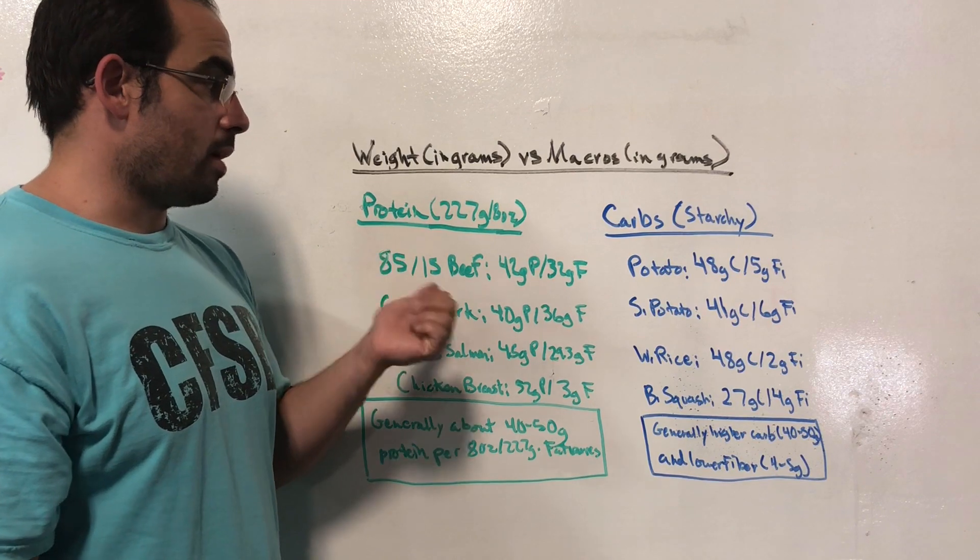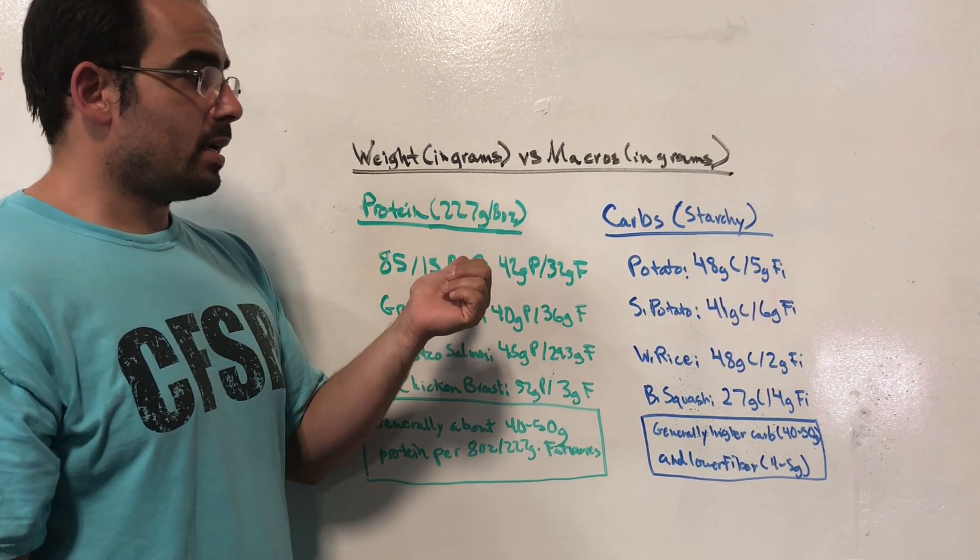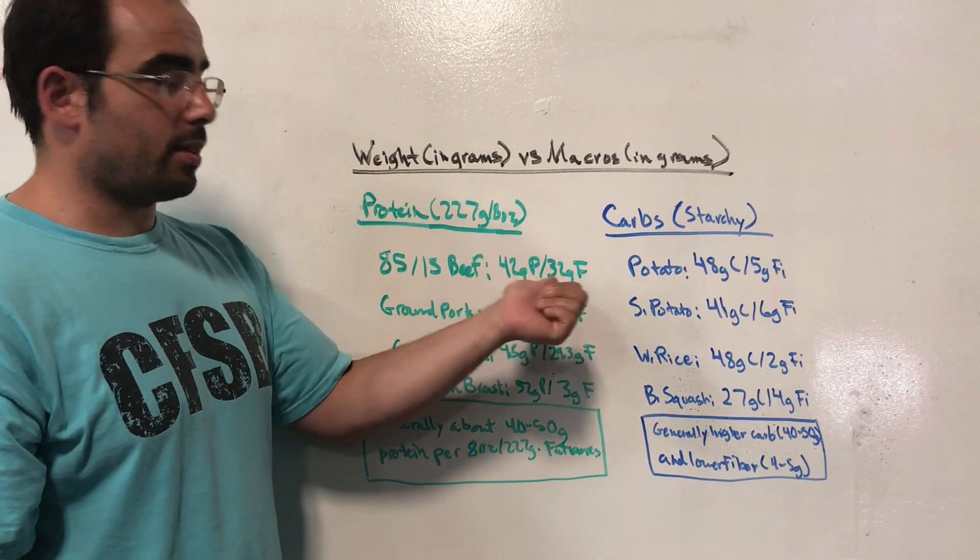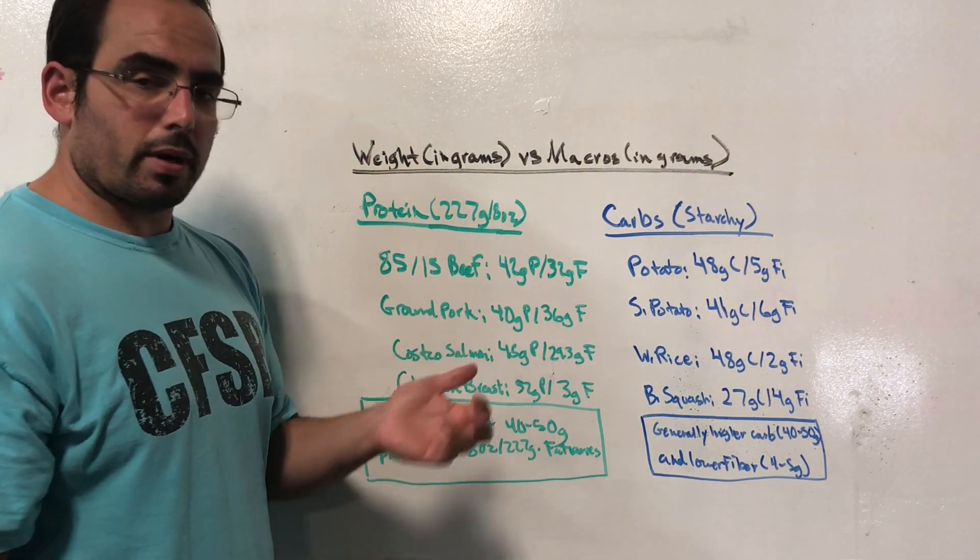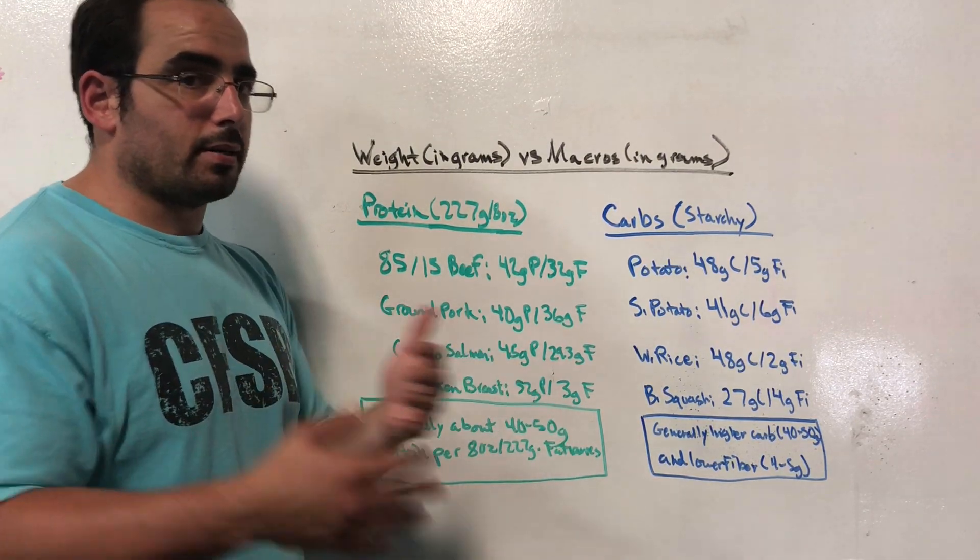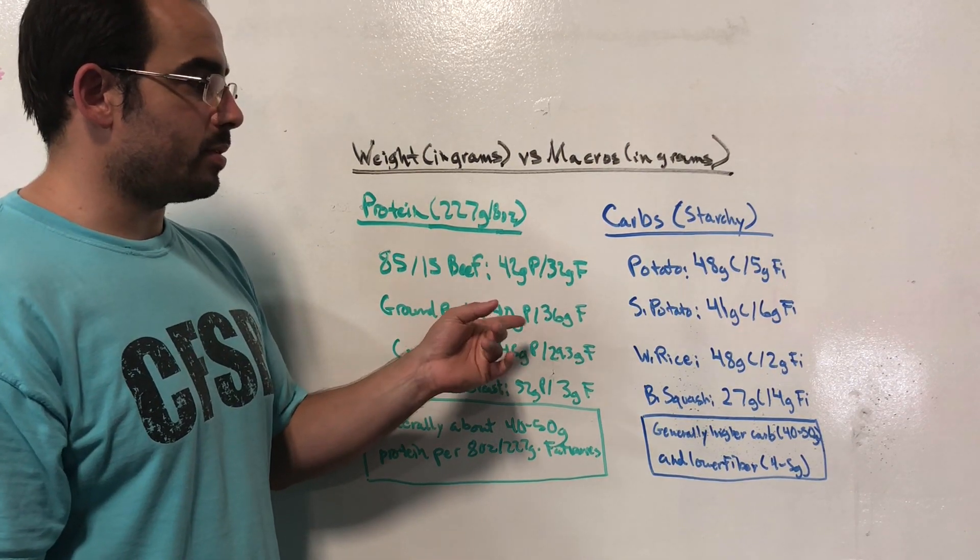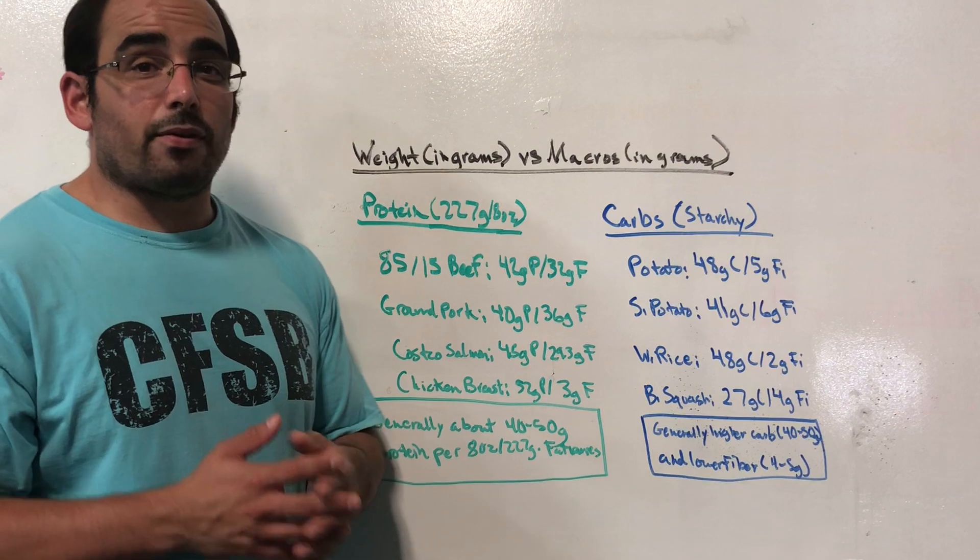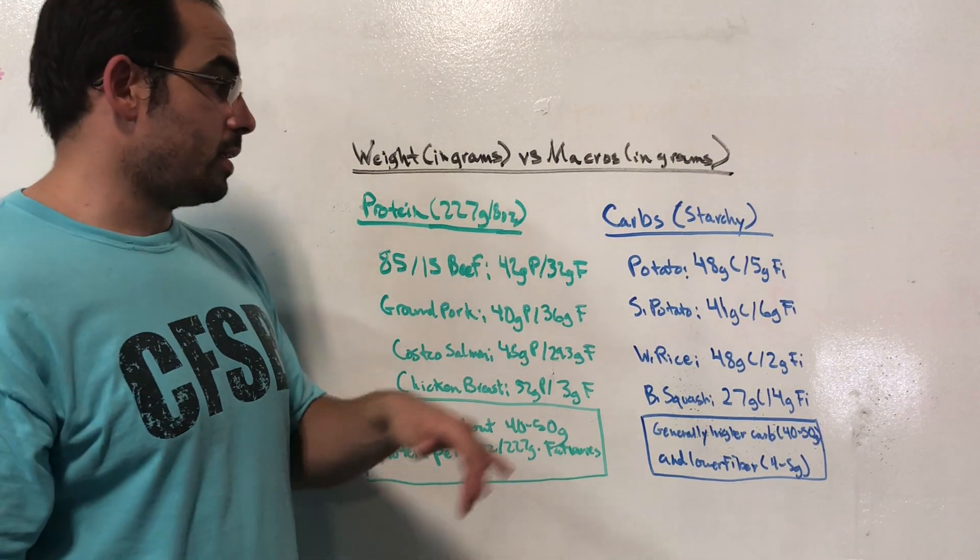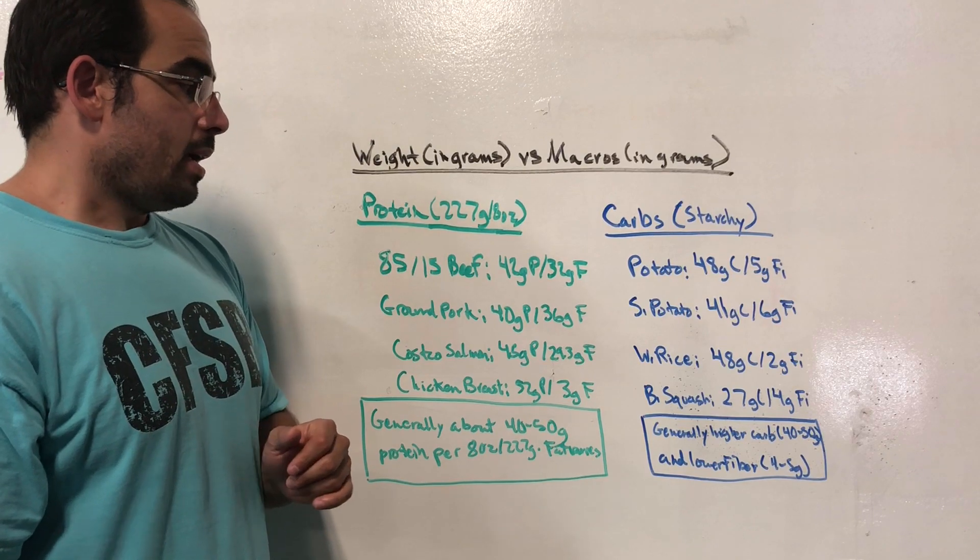85/15 ground beef - if you have an eight ounce serving of this, that's going to be 42 grams of protein and 32 grams of fat. Ground pork, it all depends on the ground pork. Is it leaner? Is it fattier? But just this particular one that I looked up in MyFitnessPal, 40 grams of protein, 36 grams of fat. Costco salmon, that's going to be about 45 grams of protein and roughly 30 grams of fat.